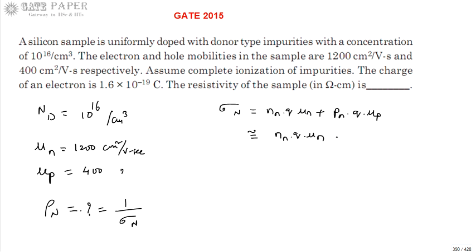Majority carriers will be more, and nn is approximately equal to Nd. Number of electrons present in the n-type silicon is approximately equal to number of donors added. So conductivity is Nd·q·μn, which is 10^16 × 1.6 × 10^-19 × 1200.